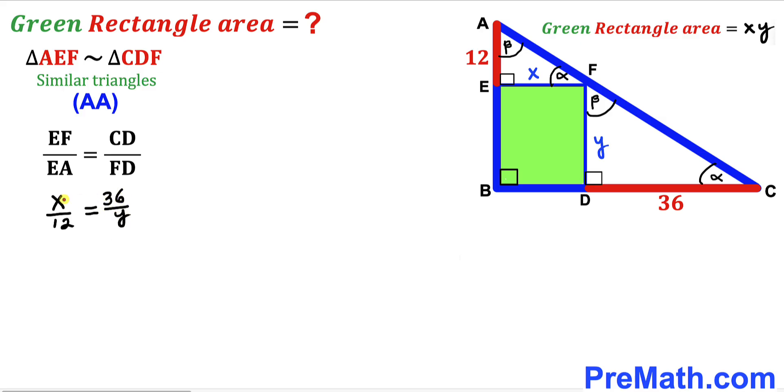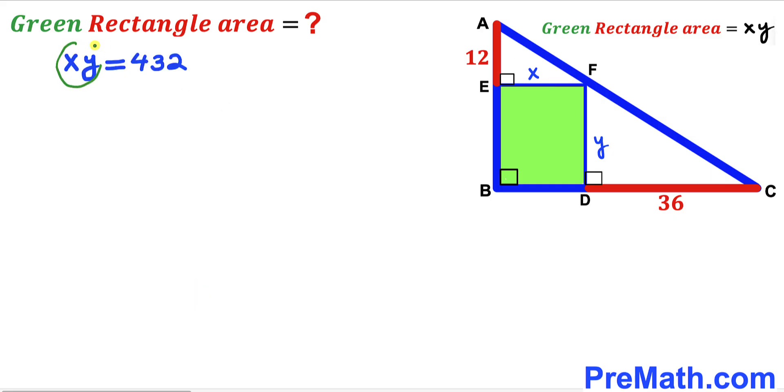Now we are going to cross multiply, so therefore we have X times Y equals 12 times 36. If we multiply 12 times 36, that is going to give us 432. Therefore our X times Y value turns out to be 432.